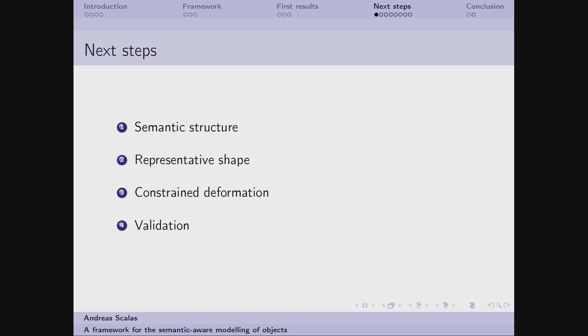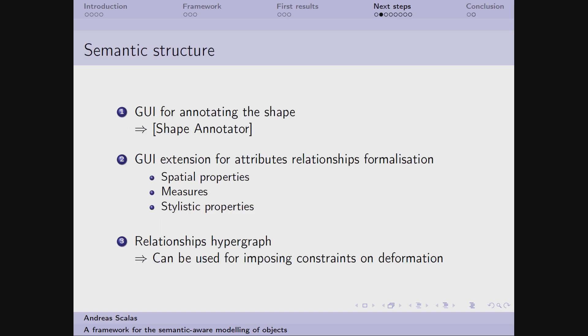Now, what remains to do? I still have to set up the semantic structure to define how we can extract the representative shape for the class, how we can perform the constraint deformation, and the class they need to validate the entire framework. For helping the domain expert, I plan to implement a user interface for annotating the regions of interest on the shape, following the example of this shape annotator, which is a tool that allows different kinds of selections and their association with conceptual tags taken from an ontology.